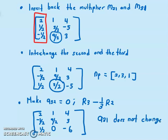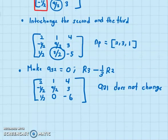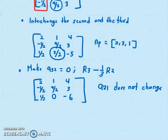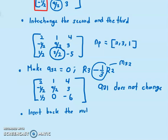So one suggestion will be you insert the multiplier at the end. So now, this is the multiplier M32. Insert that. So, I will have 2, 1, 4; minus half, 9 over 2, 3; half, negative 1 over 3, negative 6.